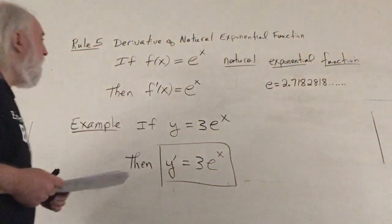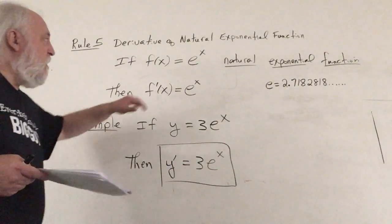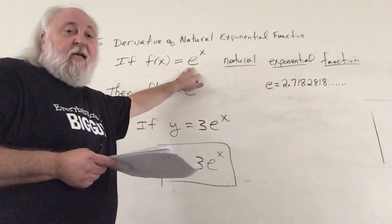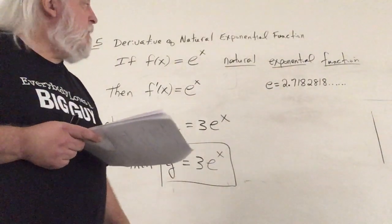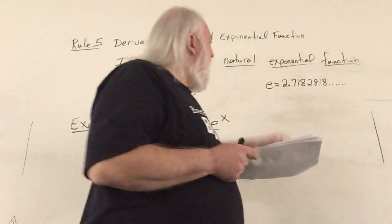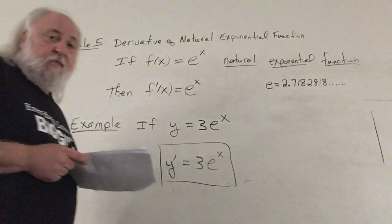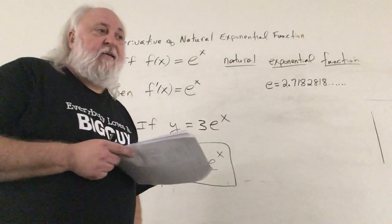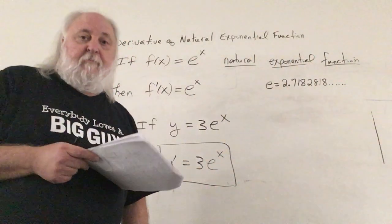Rule number five has to deal with the derivative of the natural exponential function. The natural exponential function has a form of e to the x. This e is actually a number on the real number line — it's a miracle number in mathematics, kind of like pi. It equals 2.7182818 to seven decimal places. This function gets used a lot in the sciences, finance, accounting, and other disciplines.